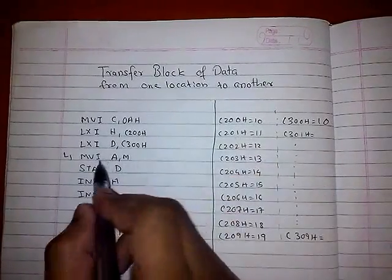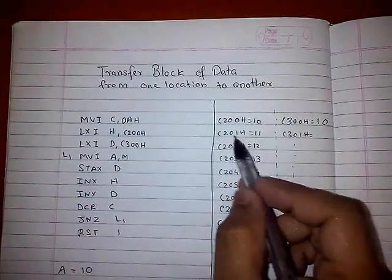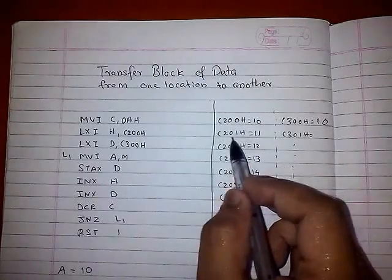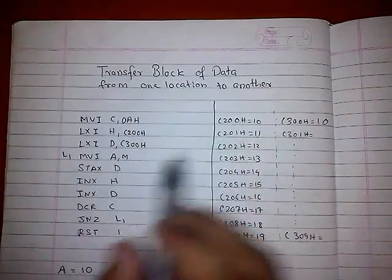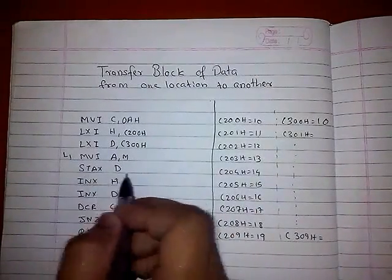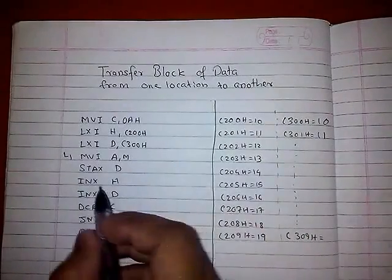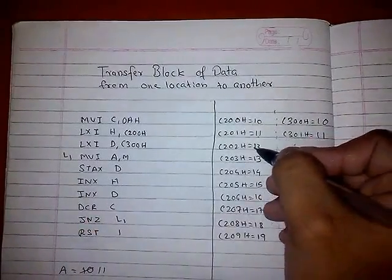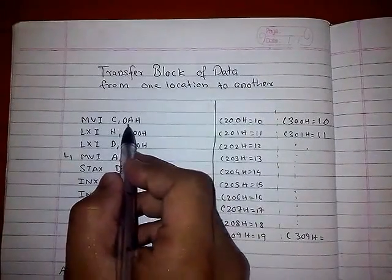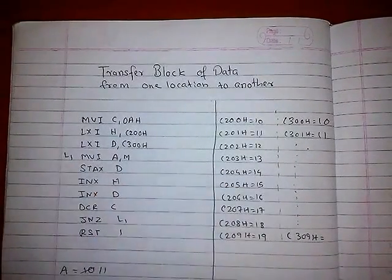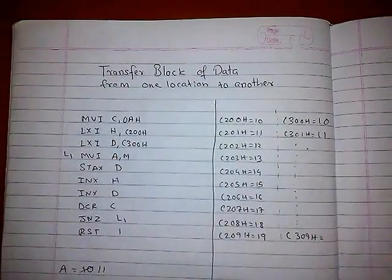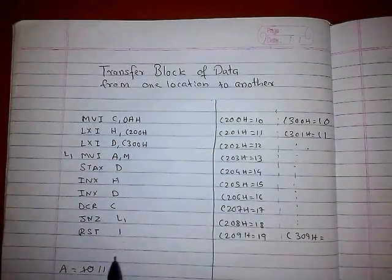It will again do MOV A, M. Now M is C201 — previously it was C200. The data of C201 will be sent to the accumulator, and then STAX D will send it to the destination. INX H for the next source memory location, INX D for the next destination memory location, DCR C to decrement the counter. This goes on until we reach C209 and the counter becomes 0, and then we stop the program.